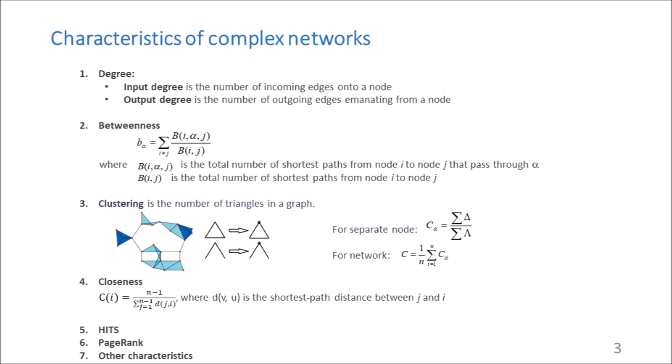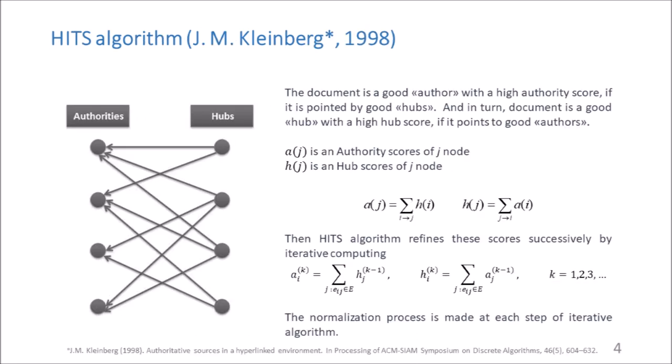For network analysis, the degree of node, betweenness, clustering, closeness, and characteristics that correspond to the HITS and PageRank algorithms are commonly used. The HITS algorithm is a ranking algorithm that was proposed and developed by Kleinberg in 1998. This algorithm calculates two numbers — an authority and hub weight — that determine a document of a certain collection as a good authority and hub, respectively.